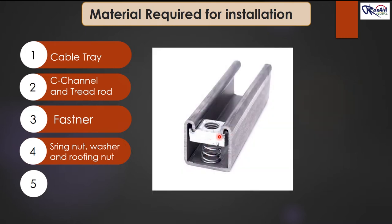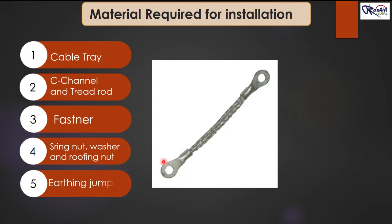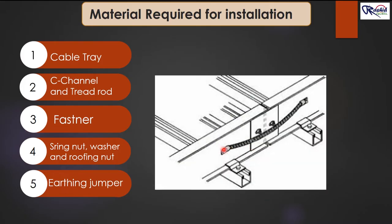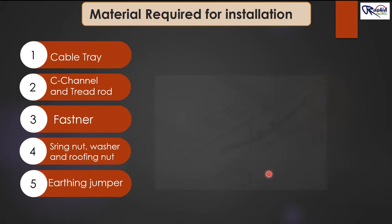Fourth, spring nut, washer and roofing bolt. Here you can see the spring nut, which is fixed inside the C-channel, then tightened at the other end of the thread rod. Fifth, earthing jumper — this earthing jumper is used to connect at the junction of two cable trays to provide the route of earthing current towards the main earth bus bar.